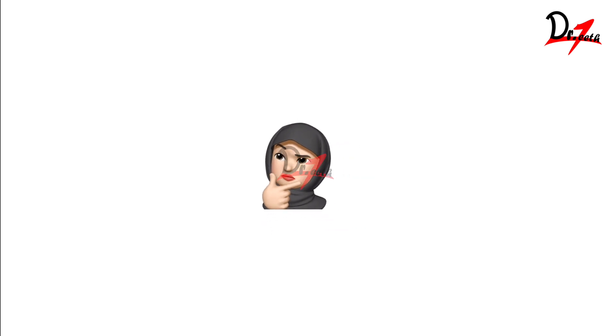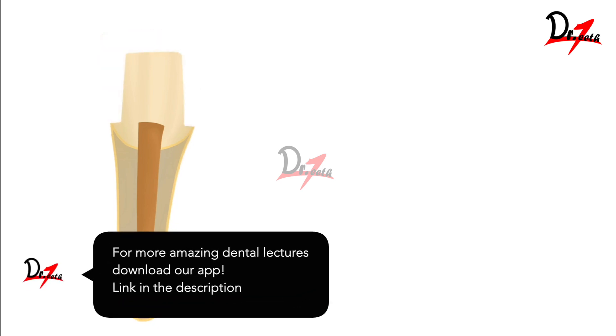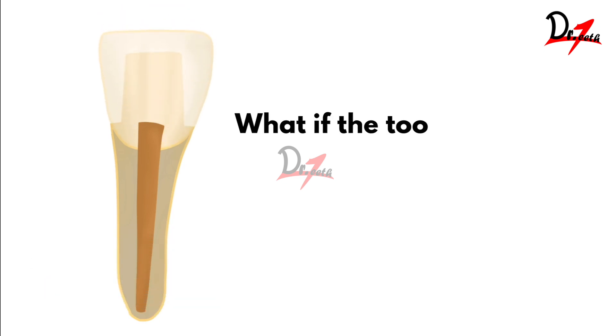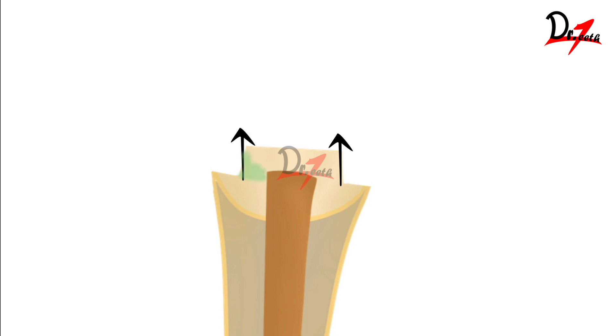We have a patient with an endodontically treated tooth that needs to be restored with a crown. If we have enough tooth structure, we go ahead, do our preparation, make an impression, and have the prosthesis made. But if the tooth structure is compromised, we have to see whether we have that minimum sound tooth structure present or not — that is, whether a ferrule is present. A ferrule is a band of sound tooth structure that remains above the gingival margin after tooth preparation.